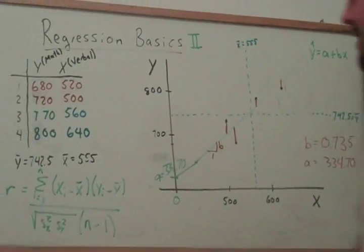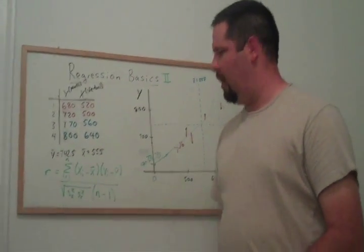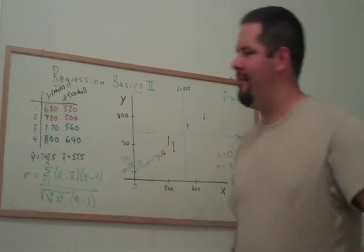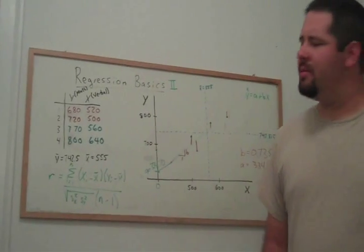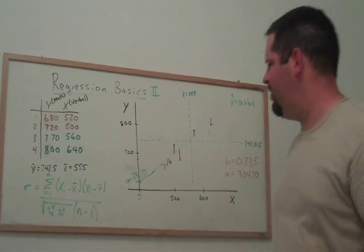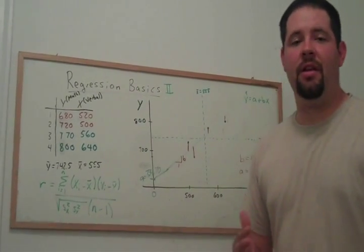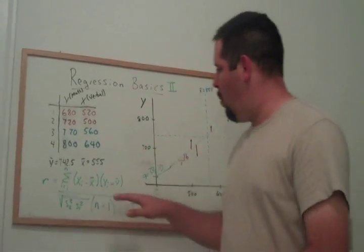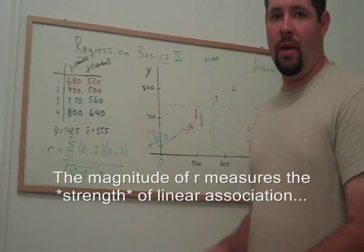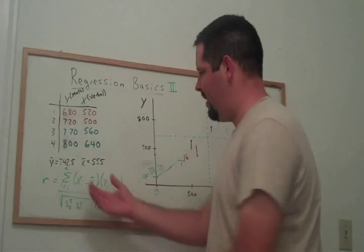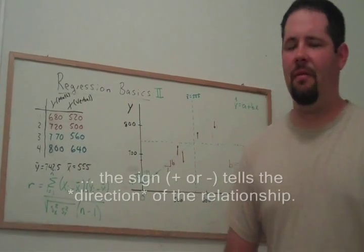So instead of just going through examples of how we can plug into this equation, I've got an example in the Excel spreadsheet I'm sending. What we'll do is give you an idea of when this is going to be big, when it's going to be small, and when this is going to be positive or negative.